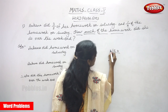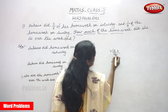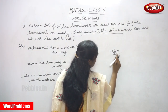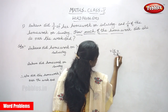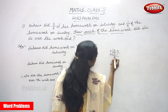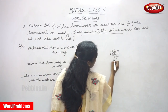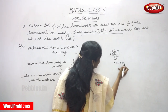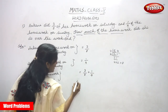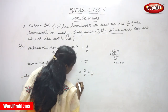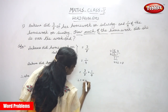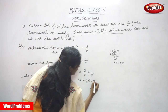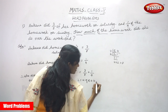The denominators are different, so we need to take the LCM of 8 and 4. Breaking it down: 4, 2, and 1; then 2 and 1; then 1 and 1. So 4 × 2 = 8. The LCM of 8 and 4 is 8.